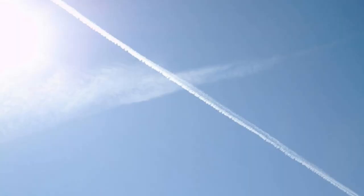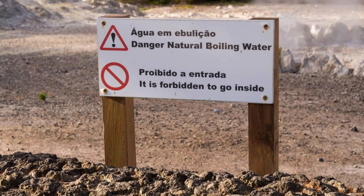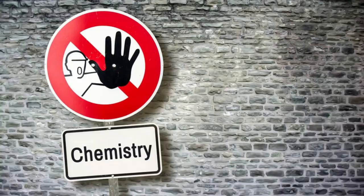Our journey begins with an introduction to chemtrails — the white streaks often seen trailing behind airplanes in the sky. While proponents of the official explanation attribute these trails to harmless water vapor condensation, conspiracy theorists argue that they contain toxic chemicals deliberately sprayed into the atmosphere for nefarious purposes.